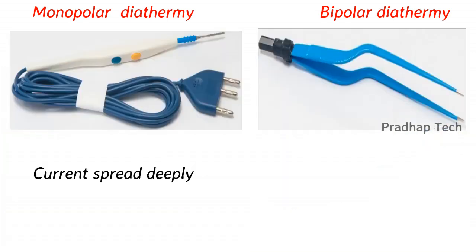In monopolar, current spreads deeply so it is not used near vital organs. In bipolar, current spreads locally. These are some of the differences between monopolar and bipolar diathermy.